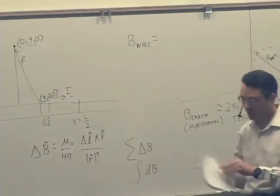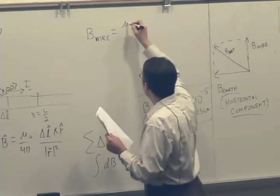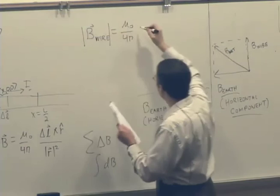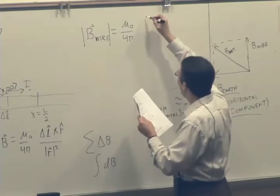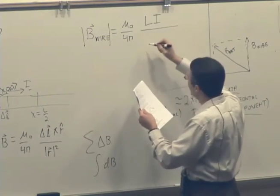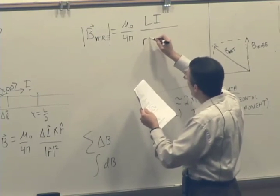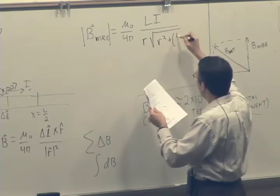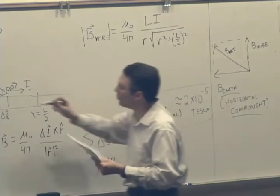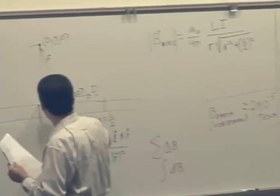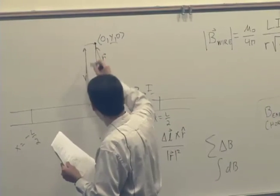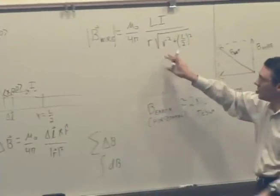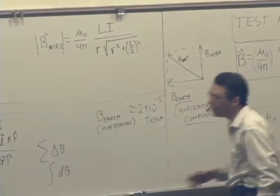The result is mu naught over 4 pi. And this is just a magnitude now, not a direction. mu naught over 4 pi, capital L times I over R times square root of R squared plus L over 2 squared. Where I'm really now calling this distance R, just like we have done in the past. I'm changing the name of that Y to R, meaning the perpendicular distance away from the current.